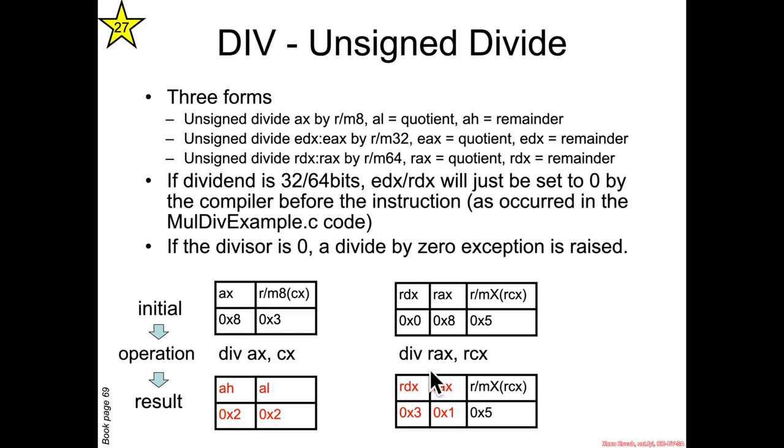Now the disassembler might actually write it like div RAX by RCX, but the actual form, the only thing that's actually being specified is the RM64 or the RM32. These divide instructions always hard code that they must have the value in RDX, RAX, EDX, EAX, etc. They only use that as the thing that's going to be divided.